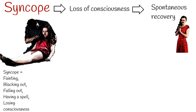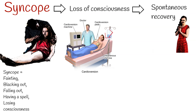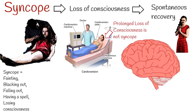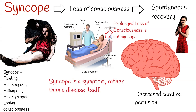If loss of consciousness is prolonged or requires electrical cardioversion, it is not syncope anymore — it can be a seizure or other more serious cause. The main mechanism of syncope is decreased cerebral perfusion. The brain needs a constant supply of glucose through adequate cerebral blood flow to function, and any interruption, even for a few seconds, can lead to loss of consciousness. Syncope is a symptom of an underlying disease process, rather than a disease itself.